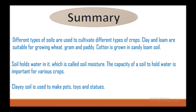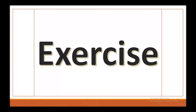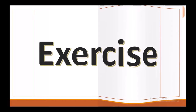Different types of soils are used to cultivate different types of crops. Clay and loam are suitable for growing wheat, gram, and paddy. Cotton is grown in sandy loam soil. Soil holds water in it, which is called soil moisture. The capacity of the soil to hold water is important for various crops. Clay soil is also used to make pots, toys, and statues.